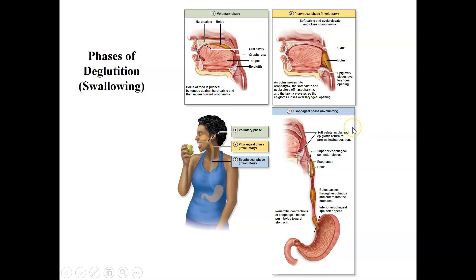That leads to phase three, the esophageal phase, also involuntary. Once the food passes the superior esophageal sphincter, the sphincter closes and the bolus is now present in the upper esophagus. The esophagus mucosal epithelium secretes lots of mucus, so the esophagus is very well lubricated. Motility through the esophagus involves peristaltic contractions of the muscularis layer. Motility in the pharynx is due to contraction of skeletal muscles — the pharyngeal constrictors — and in the esophagus it's by peristalsis due to the smooth muscle layers in the muscularis externa.